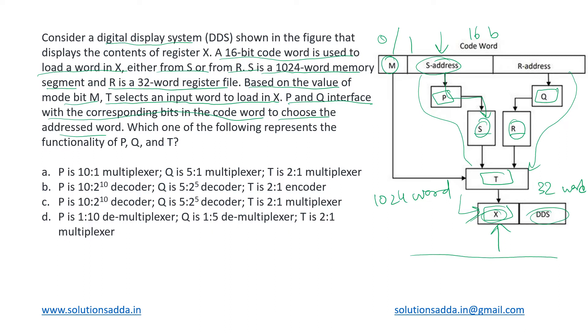Which one of the following represents the functionality of P, Q, and T? So we basically have to identify what kind of devices can this P, Q, and T be. Now as it is given, this is a 16-bit code word which is divided into two parts: the S address and the R address.